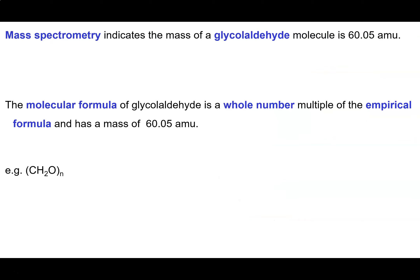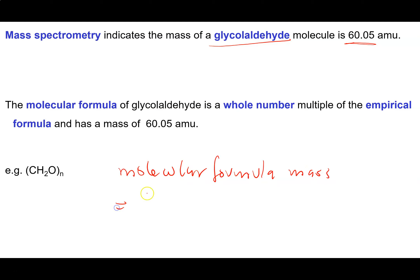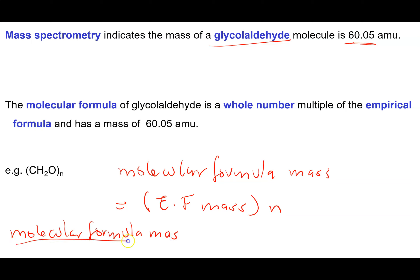When you do this kind of experiment on glycolaldehyde, you figure out the mass of the molecule is 60.05. We know that the molecular formula mass equals the empirical formula mass multiplied by some whole number N. So if we take the molecular formula mass and divide it by the empirical formula mass, we get N.